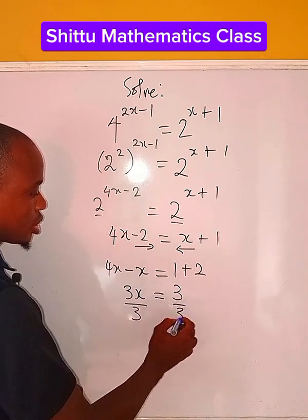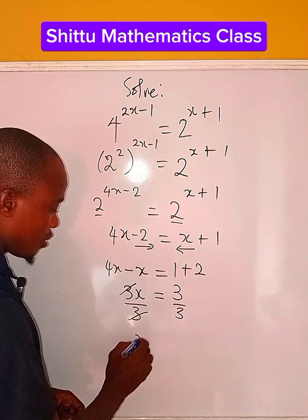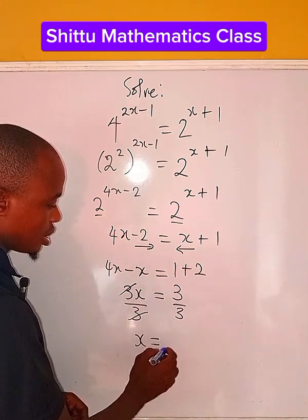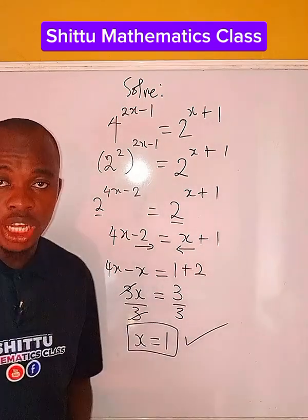So we divide both sides by 3. We cancel this. That means that we have x to be equals 3 divided by 3, that is 1. So we have the solution to be 1.